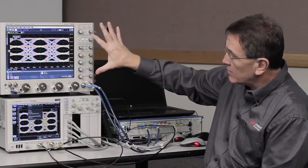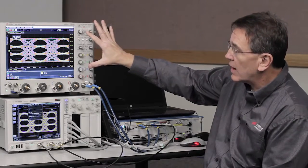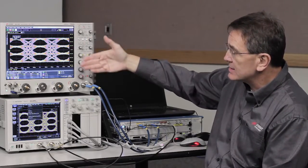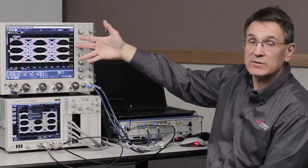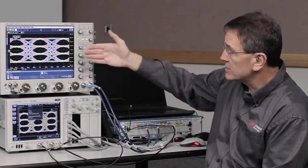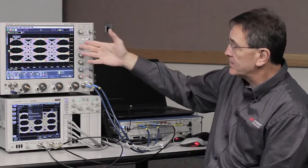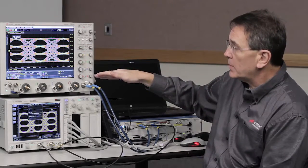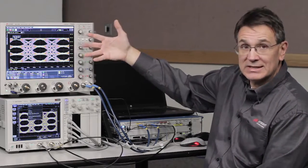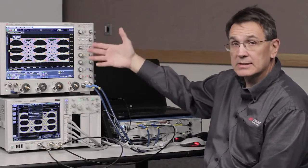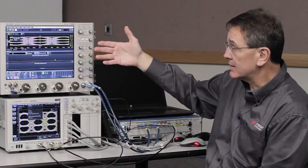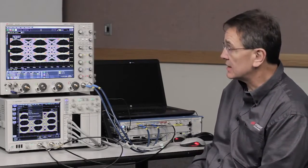So now you can see the software itself has rendered the PAM-4 eye and it's attempting to assign or determine what the proper levels are for this particular signal that we're driving into the scope. And then once it has those levels established, we'll go on and complete the measurements that we requested in the setup page as we selected them.